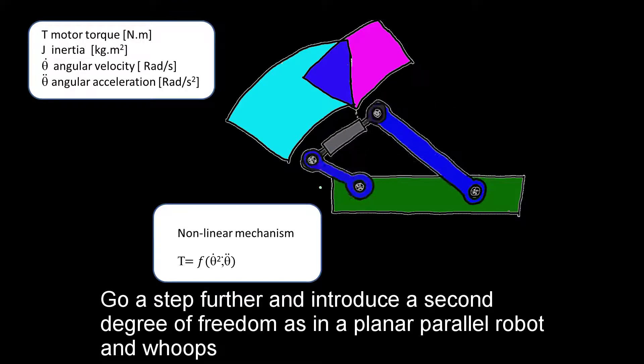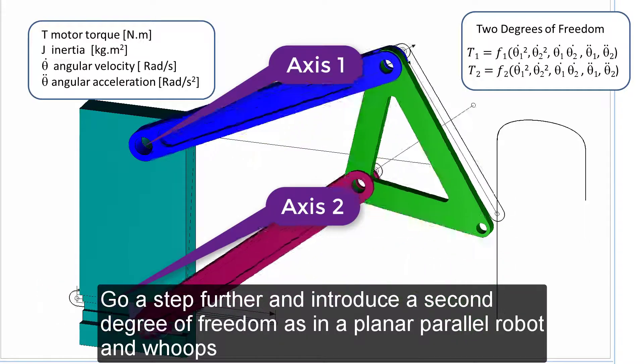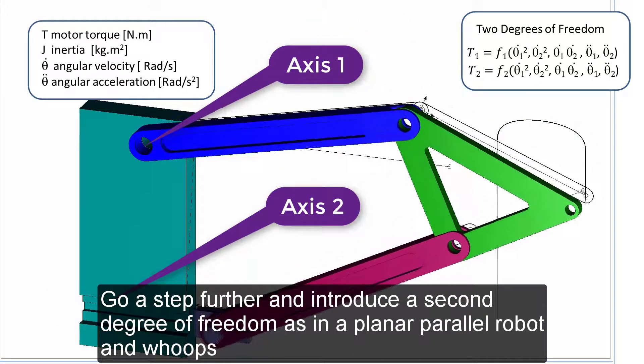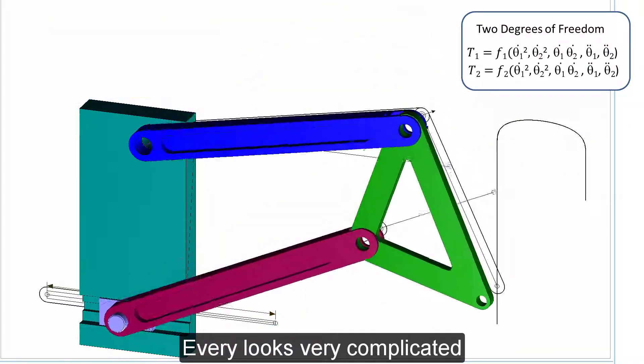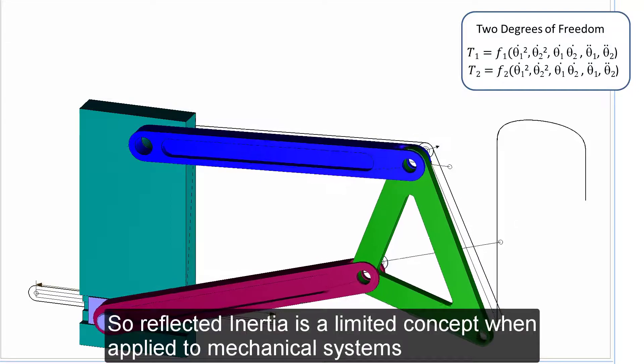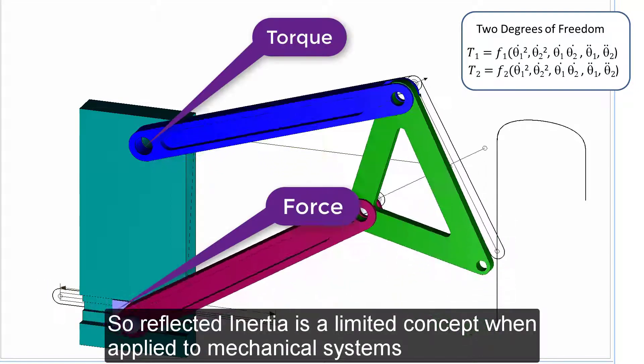Go a step further and introduce a second degree of freedom, as in a planar parallel robot, and whoops, everything looks very complicated. So, reflected inertia is a limited concept when applied to mechanical systems.